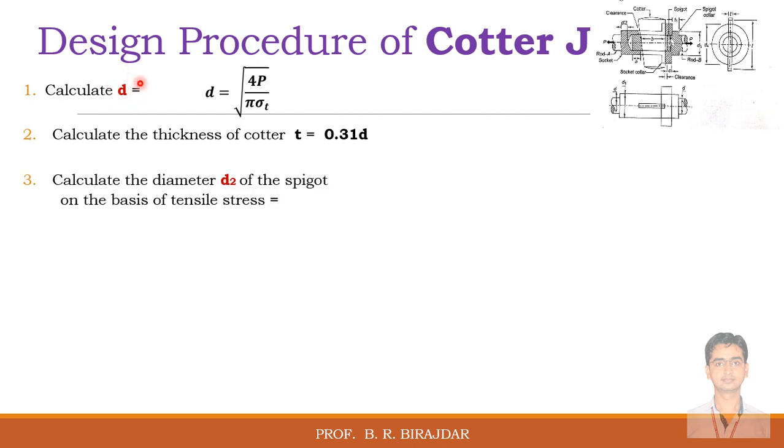Calculate the diameter d2 of the spigot on the basis of tensile strength. The tensile strength sigma t is equal to the load upon the resisting area. So your resisting area is pi by 4 d2 square minus d2 t. From this we can calculate the diameter d2 of the spigot.